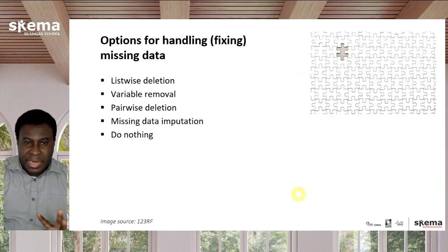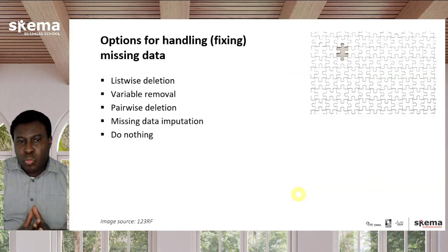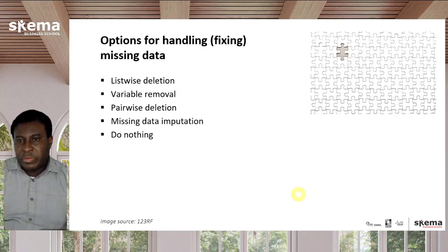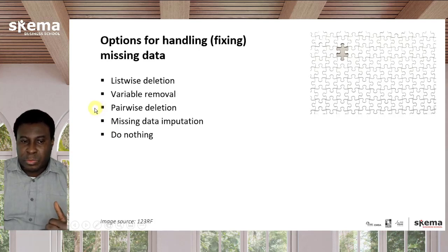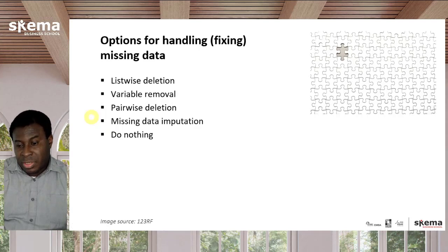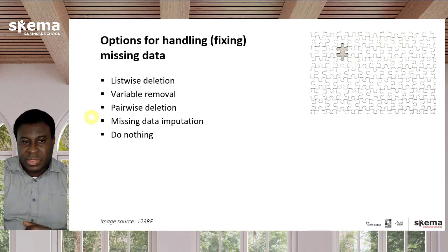Now let's look at what you can do to fix missing data. There are five general things you could do: listwise deletion, variable removal, pairwise deletion, missing data imputation, or you could do nothing.